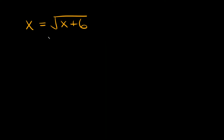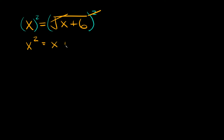Here we have x is equal to the square root of x plus 6. We have a variable on both sides, and when that happens that's often a hint you might have to factor. In order to get rid of a square root you just square it, and what we do to one side we do to the other. So we get x squared is equal to x plus 6.